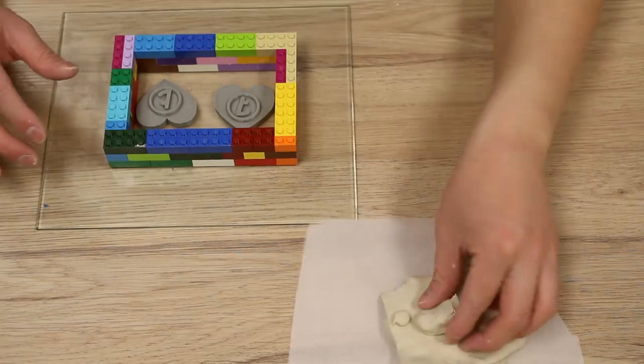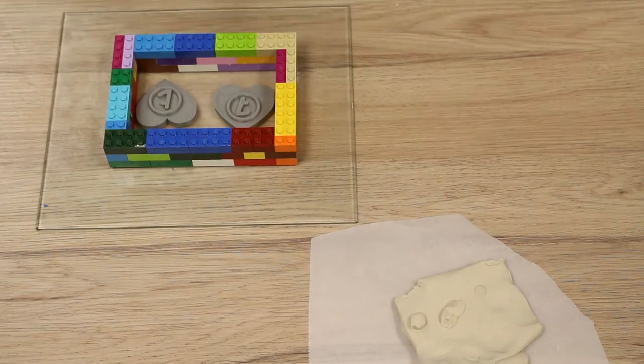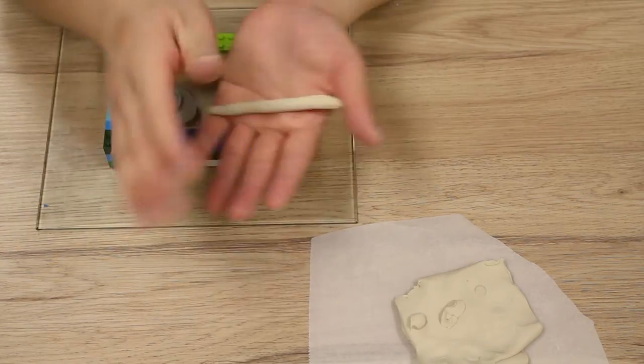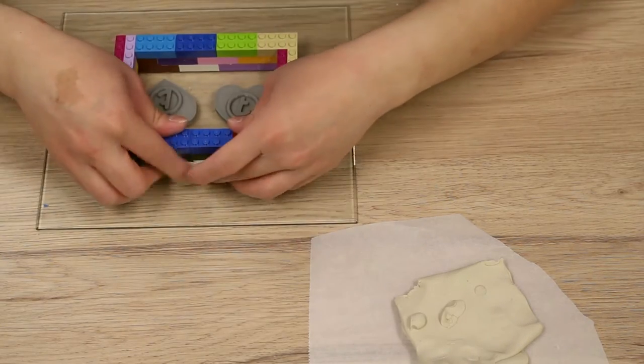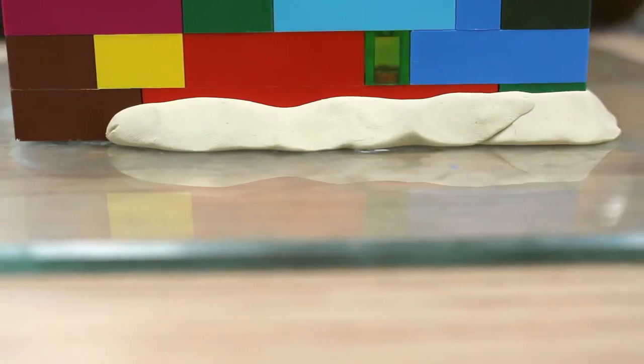Afterwards, place the Lego rectangle over the pieces and use the clay to surround the Lego rectangle. This will prevent the silicone from leaking as well as prevent the Lego from moving around.